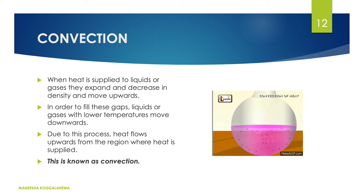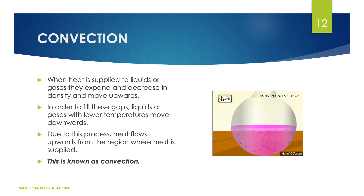Now convection of heat. As shown in the diagram, when heat is supplied to a liquid or gas, they expand and decrease in density, gaining the ability to move upwards. In order to fill these gaps, liquid or gas particles with lower temperature move downwards. Due to this process, heat flows upward from the region where heat is supplied. This is known as convection. In the diagram you can also see these convection currents.